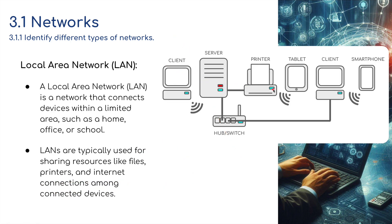Here's an example — I've got a picture drawn here of a local area network. A LAN is a network that connects devices within a limited area, such as a home, office, or a school — essentially a building. LANs are typically used for sharing resources like files and printers, as you can see here — files stored on the server or the printer. The devices are not necessarily wired in; there could also be wireless connections, which I've shown here.